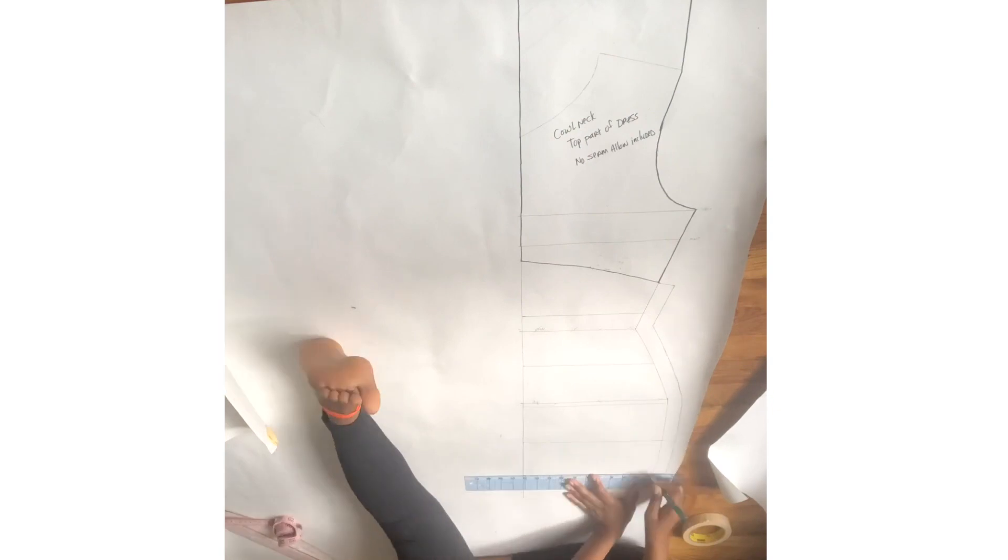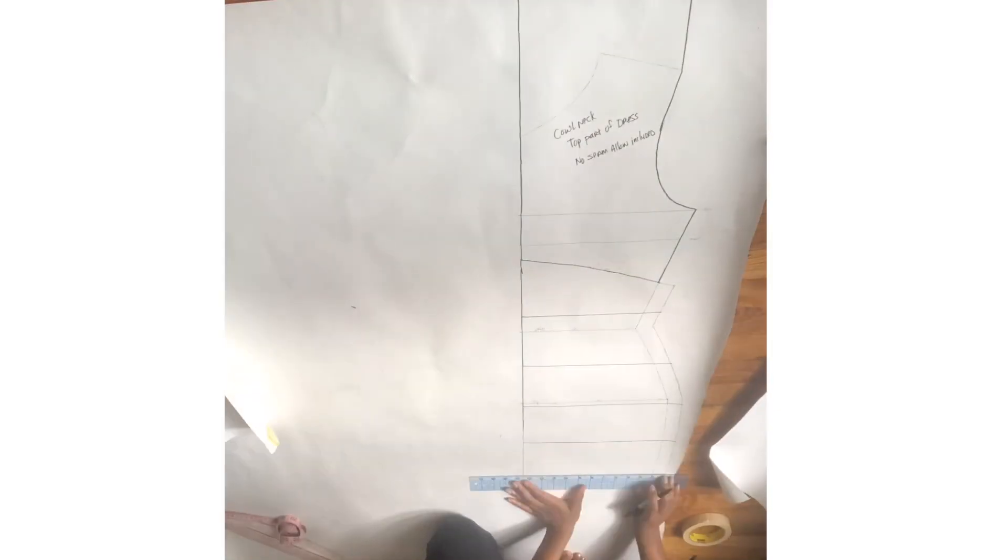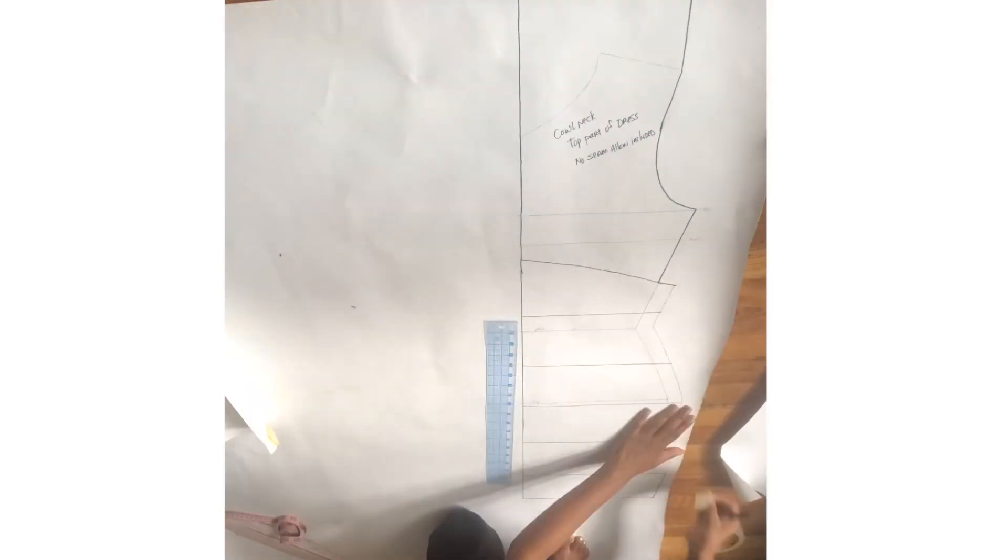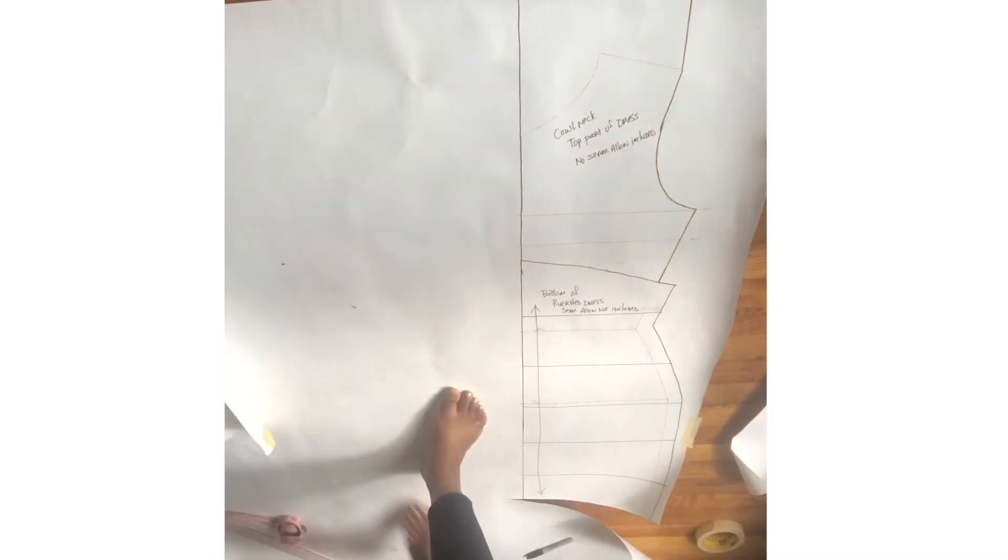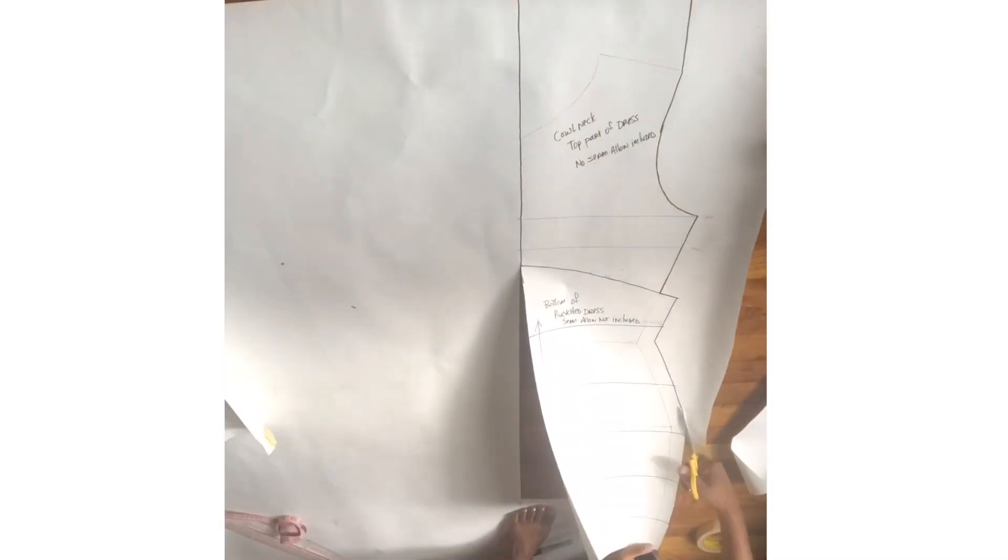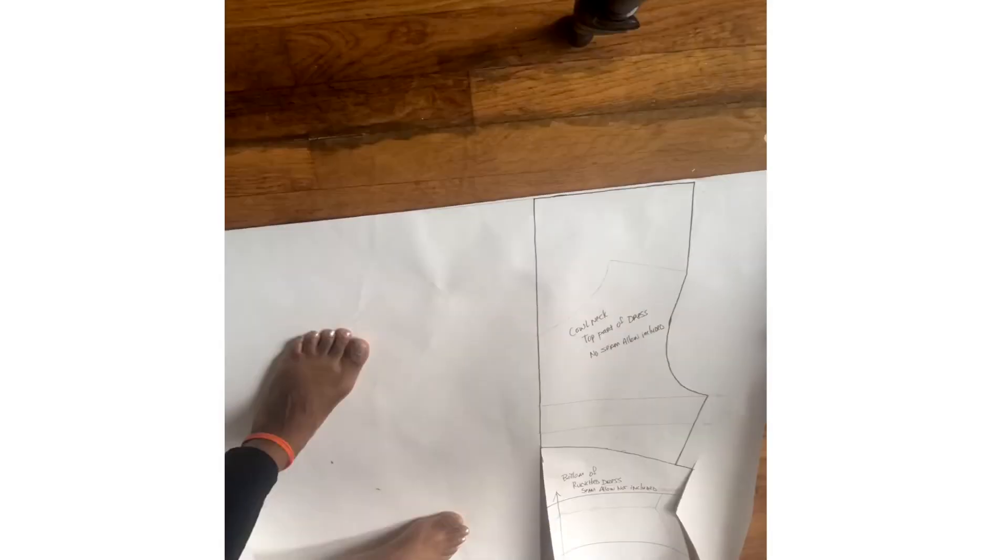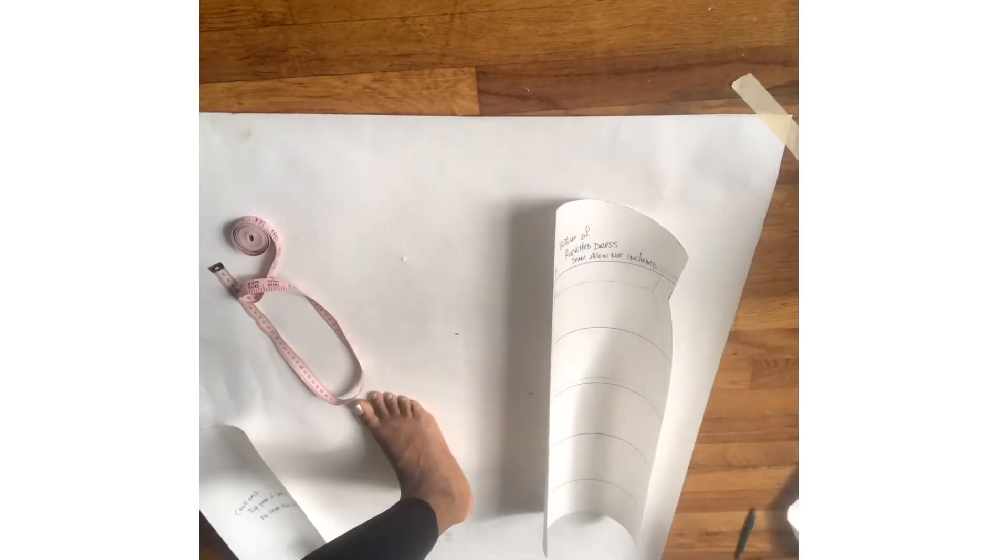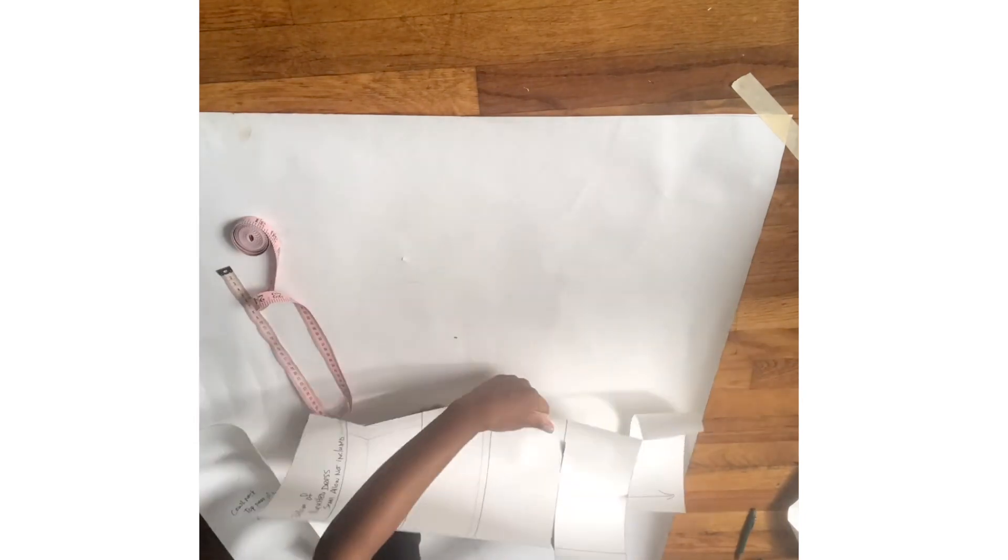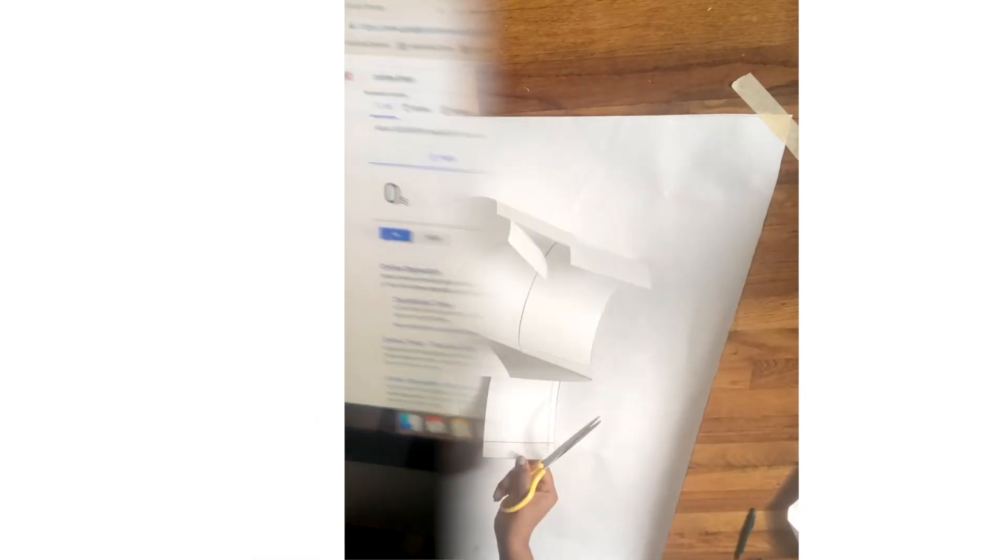That space was supposed to be for the drawstrings for the dress to create the ruched effect. Then for the bottom half of the bodice block I divided it into six equal sections, labeled it, cut the pattern out completely, divided the two pieces, and then I took the bottom part and basically cut it into six sections so that I could create that ruched effect. And then my time was up.